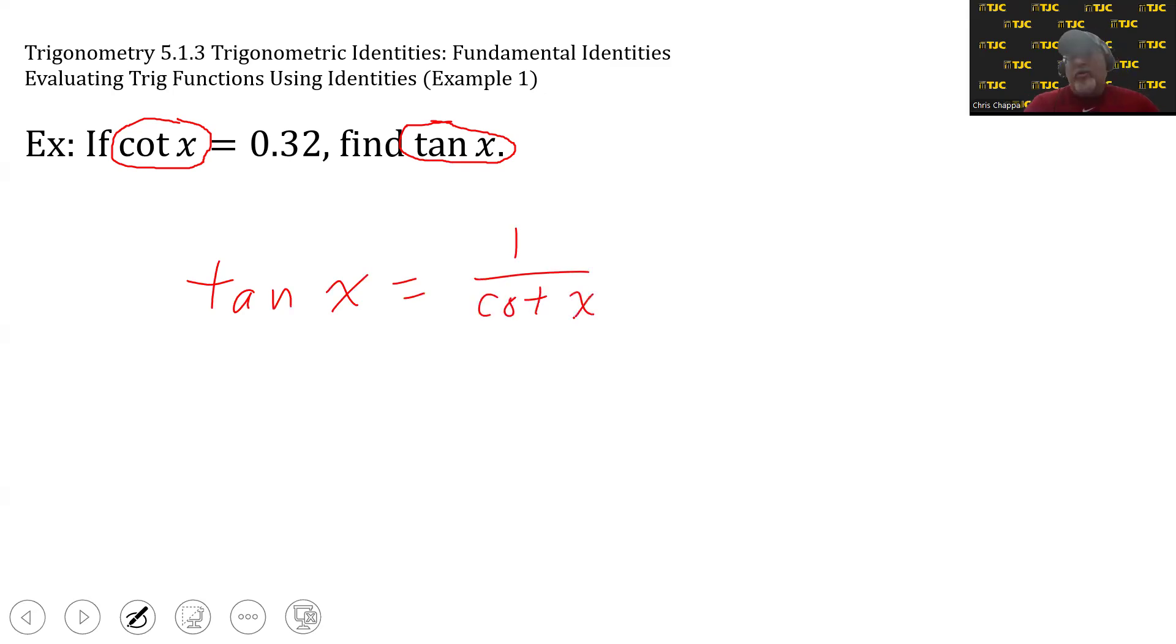I could have also written that cotangent of x is the reciprocal of tangent of x, but since we're being asked to find what tangent of x equals, I chose the version that starts with tangent of x equals. And since we know cotangent is 0.32, we simply have to substitute 0.32 underneath the 1.